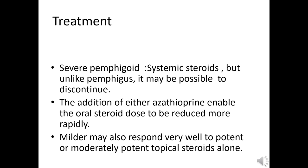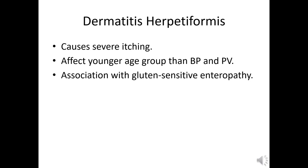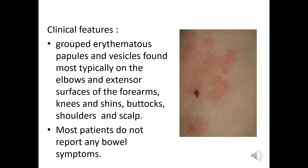Mild cases of bullous pemphigoid may be treated only with topical treatments like moderate or potent steroids. The last condition is dermatitis herpetiformis, one of the conditions in dermatology that causes severe itching. It affects a younger age group than pemphigus vulgaris and bullous pemphigoid, and the main cause is gluten hypersensitivity. The features are grouped erythematous, scaly, papular, and vesicular lesions on the extensors of the shoulders, elbows, thighs, buttocks, and sometimes scalp. Most patients do not have overt celiac disease or bowel symptoms.